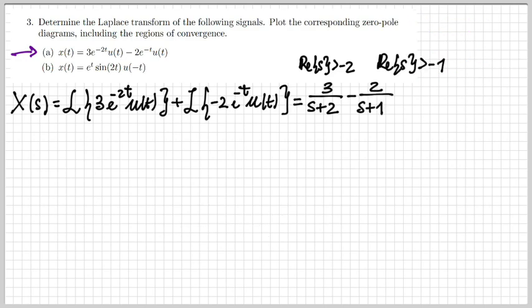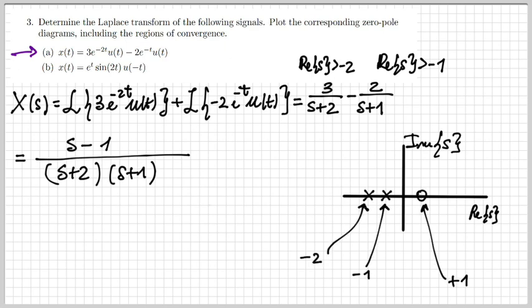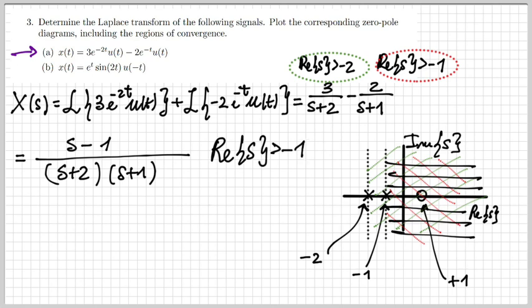Now let's look at the overall Laplace transform. The expression after simple manipulation is (s minus 1) over (s+2)(s+1), with poles at minus 2 and minus 1, and a zero at plus 1. The region of convergence is the intersection of the two individual ROCs: real part of s larger than minus 2 (shown in green) intersected with real part of s larger than minus 1 (shown in red), giving real part of s larger than minus 1.